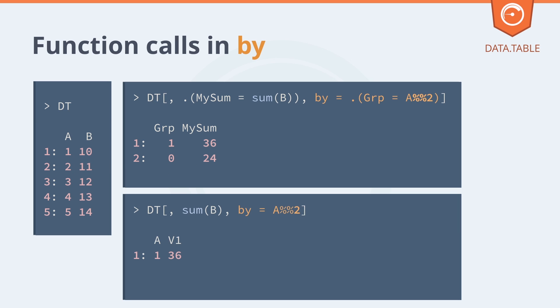There is a shortcut in data table. If you just have one item in J or one item in by, you don't have to use the dot parenthesis notation. You can drop that and just use the aggregate directly and use the column name or even a function of the column name directly in by. We do that quite a lot if we don't mind too much about the output column names.